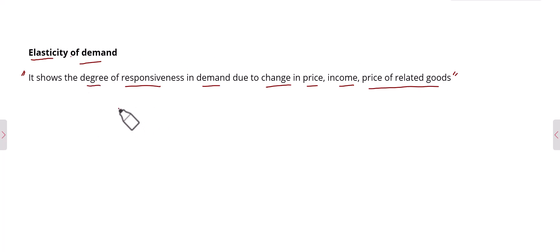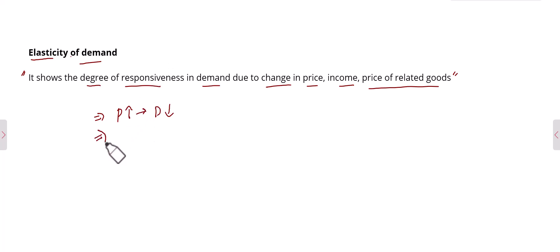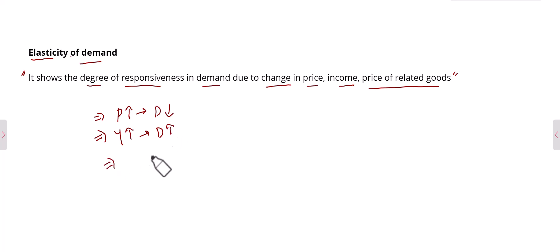When price increases, demand decreases. It might be possible that price and demand are both changing by the same percentage, or it might be possible that price is increasing by a larger percentage but demand is showing a smaller percentage change. Similarly, when income increases, demand also increases.